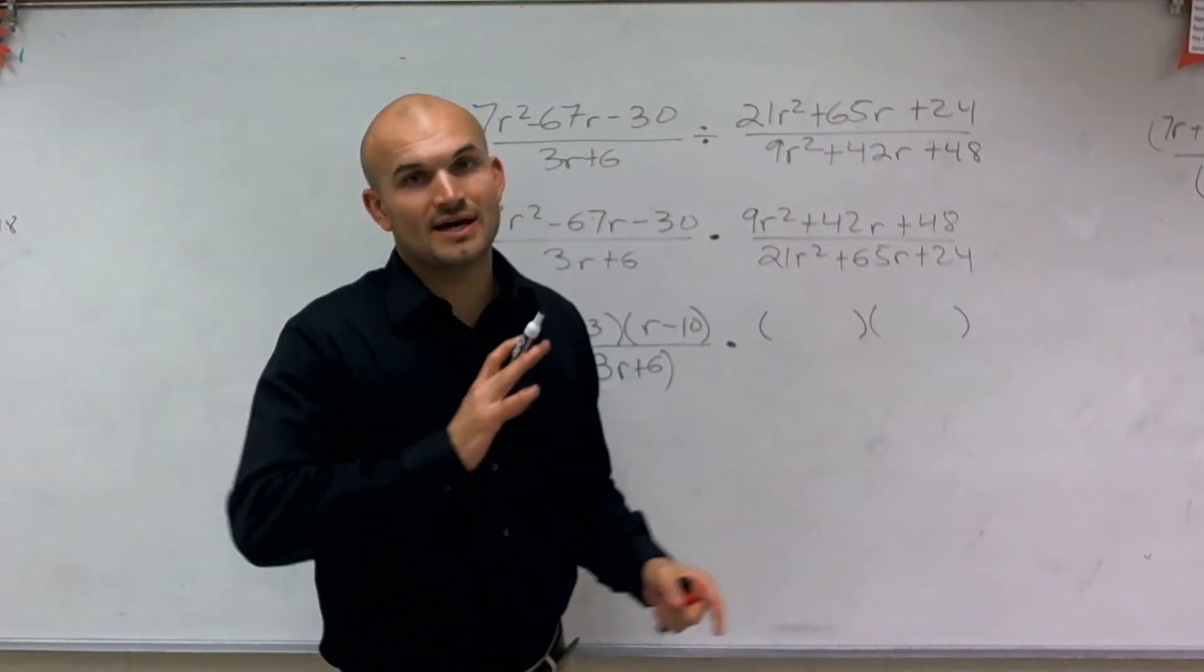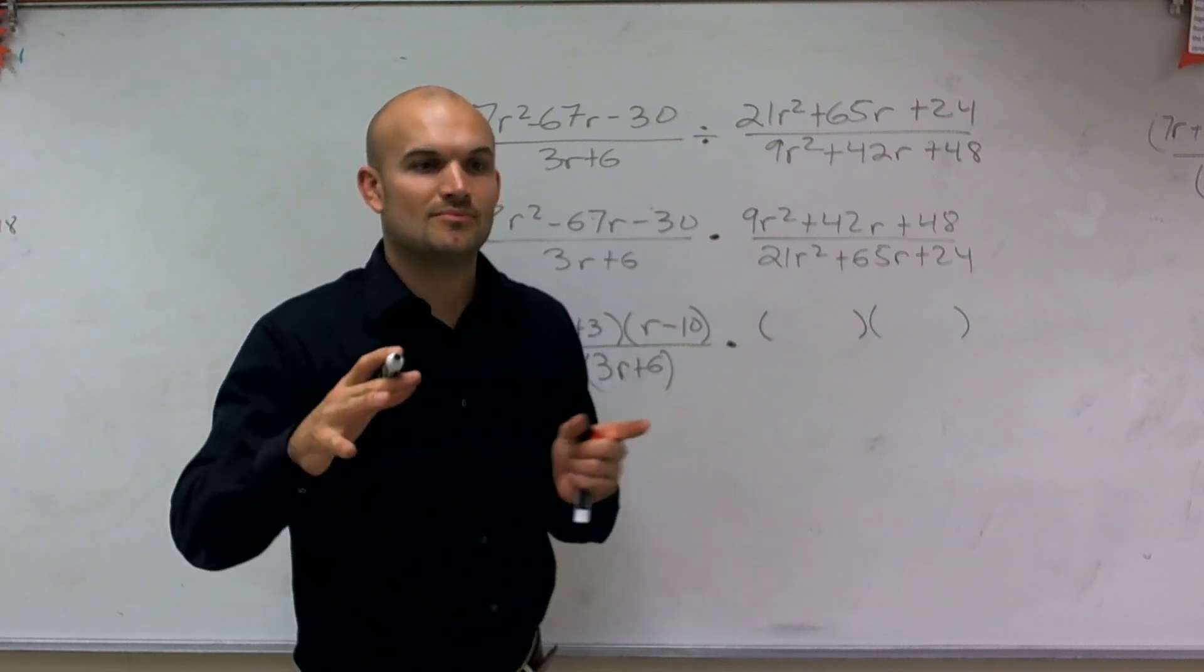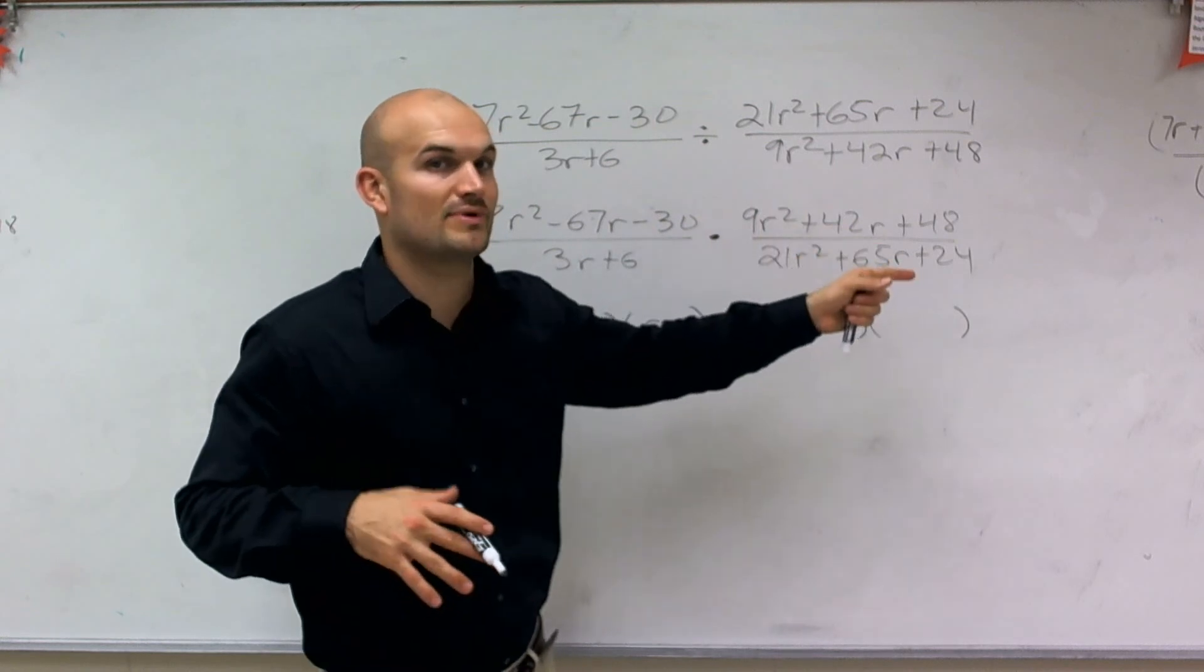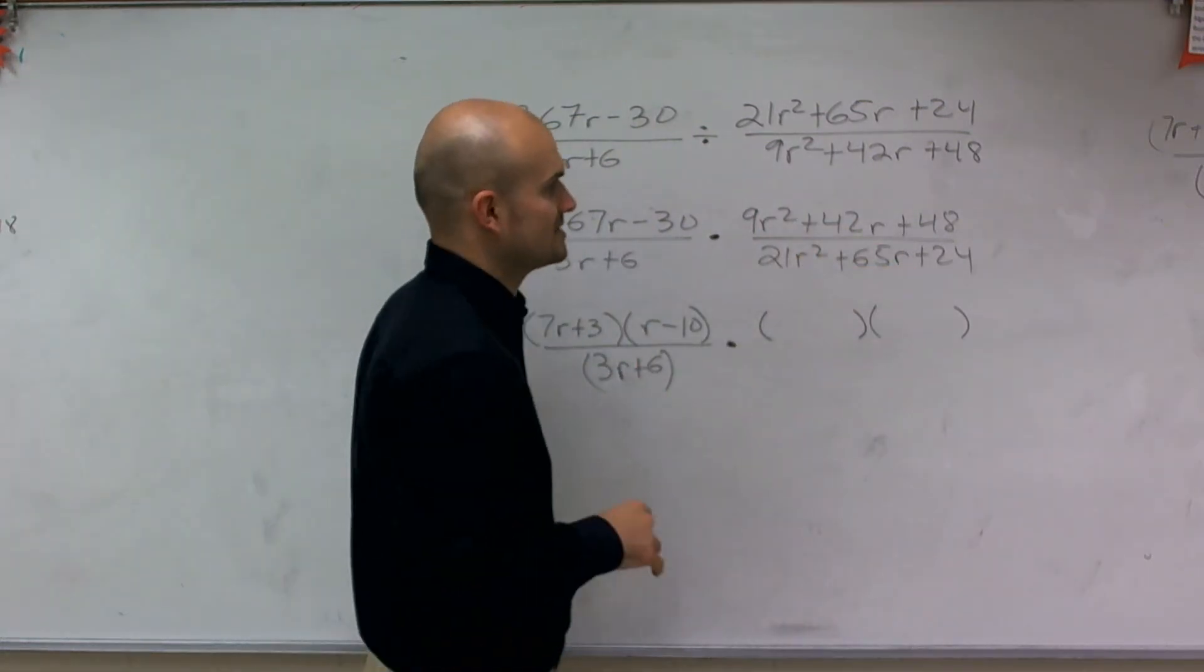Because actually how this problem works is we're going to get a factor that is, if we factor out a 3, we're actually going to want to multiply that 3 back when we eliminate. And you'll see exactly what I'm talking about here in a second.